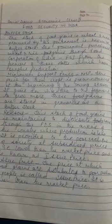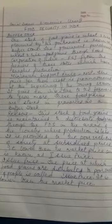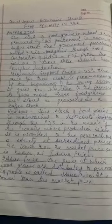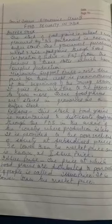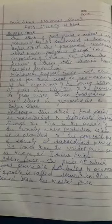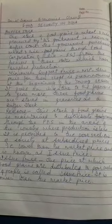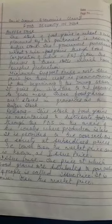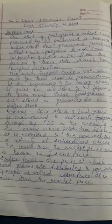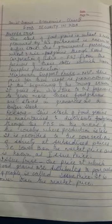Good morning children. Today in Social Science, in Economics, in Class 9, we continue the lesson 'Food Security in India.' Buffer stock is the stock of food grains — that is wheat and rice — which is procured by the government. This surplus is stored, and it is known as a buffer stock. These food grains are stored in granaries.